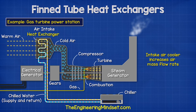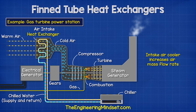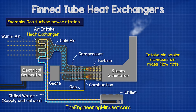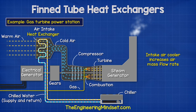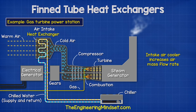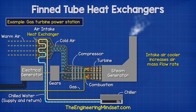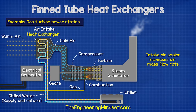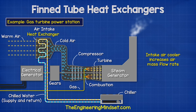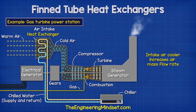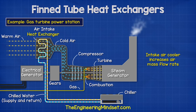The warm ambient air passes over the outside of these tubes. The thermal energy transfers from the hot air into the cold water. The air will leave cooler and enter the turbine. The water leaves warmer and heads back to the chiller, where the unwanted heat will be rejected back into the atmosphere.